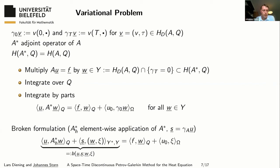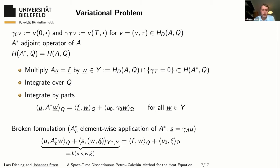I introduce the operator A*_h, which denotes the element-wise application of the operator A*, where element-wise means with respect to an underlying triangulation. Functions in the domain of this operator do not have any continuity assumptions across the interfaces of the underlying triangulation — exactly what we want. I take a function living in this domain, multiply the PDE with this function, and apply an element-wise integration by parts, which leads to some trace living on the boundaries of these elements, of these cells in my triangulation. One can treat this on a very abstract level, saying that this trace is an element in the dual of our test space Y. For smooth functions, I can write this down as a sum of certain boundary integrals; for non-smooth functions it's complicated but can be defined on an abstract level.